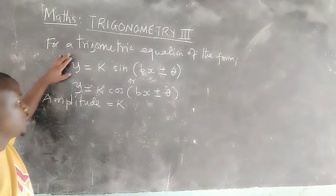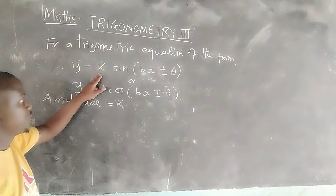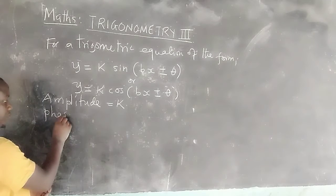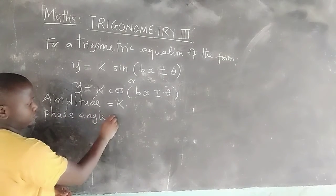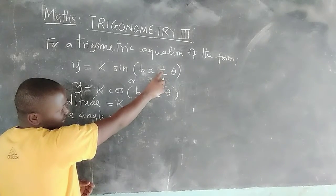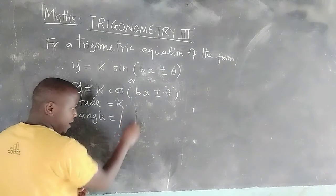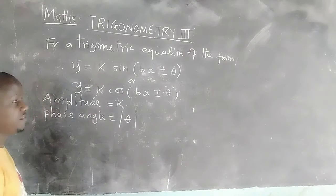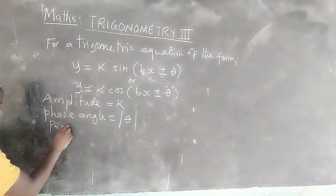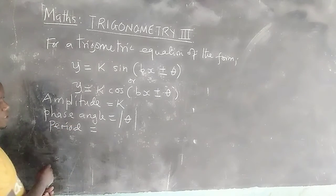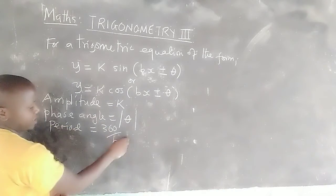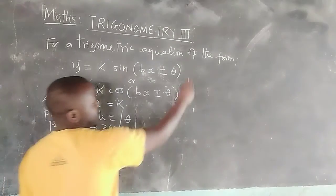If we draw this equation, it will have an amplitude of value k. The phase angle will be the angle θ — that absolute value of θ. Then we have what we call the period. The period of the trigonometric wave will be 360 divided by the value of b. Let us take an example.